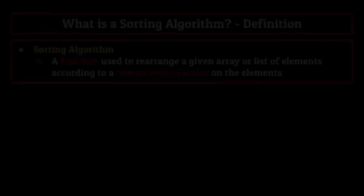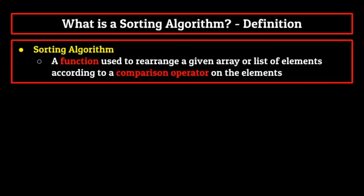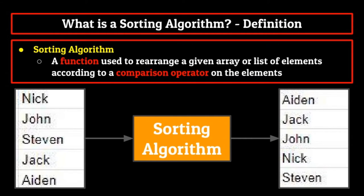Thus, we can finally define a sorting algorithm as a function used to rearrange a given array or list of elements according to a comparison operator on those elements. This comparison operator will be what we use to place the elements in order, and will help us create our sorted list.